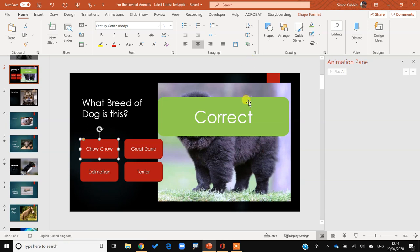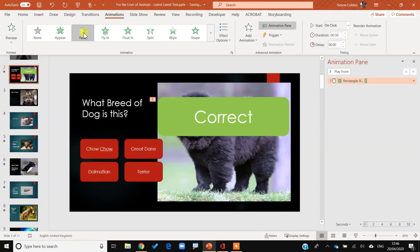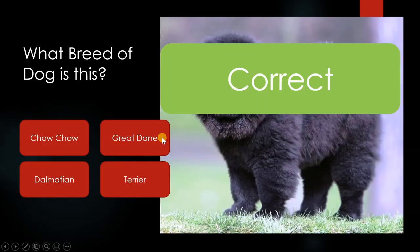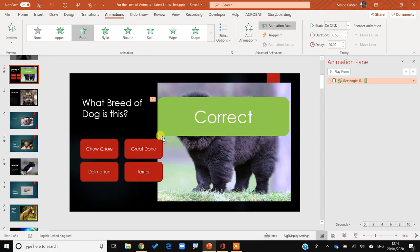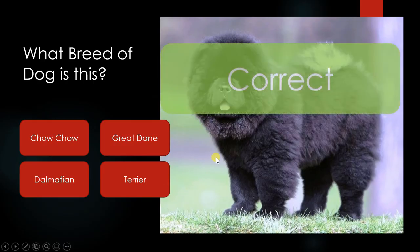So I'd normally go to Animations at the top and click on 'Fade'. When I run the presentation — a nice little tip, Shift+F5 runs the presentation from that point — if I click once, you can see 'correct' appears. That's fantastic but the problem is when I click anywhere 'correct' appears. I want correct to appear only when I'm clicking on Chow Chow.